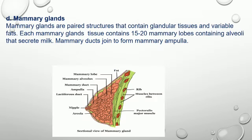Mammary glands are paired structures that contain glandular tissues and variable amounts of fat. Each mammary gland tissue contains 15 to 20 mammary lobes containing alveoli that secrete milk. The mammary ducts join to form the mammary ampulla.